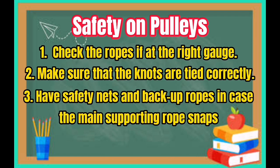Safety on Pulleys. Number 1: Check the ropes to ensure they are the right gauge. Number 2: Make sure that the knots are tied correctly. Number 3: Have safety nets and backup ropes in case the main supporting rope snaps.